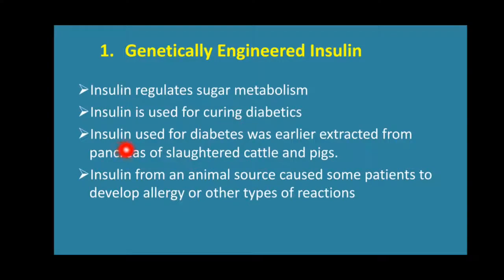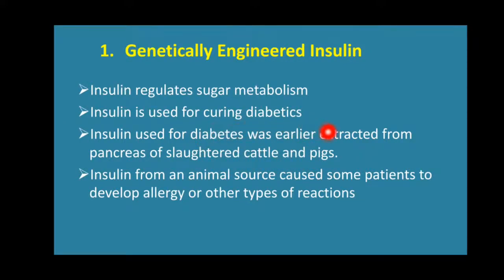Insulin used for diabetes was earlier extracted from the pancreas of slaughtered cattle and pigs. When this animal-sourced insulin was used, it caused some adverse effects or allergies in patients. So insulin from an animal source caused some patients to develop allergies or other types of reactions, making it not very effective.